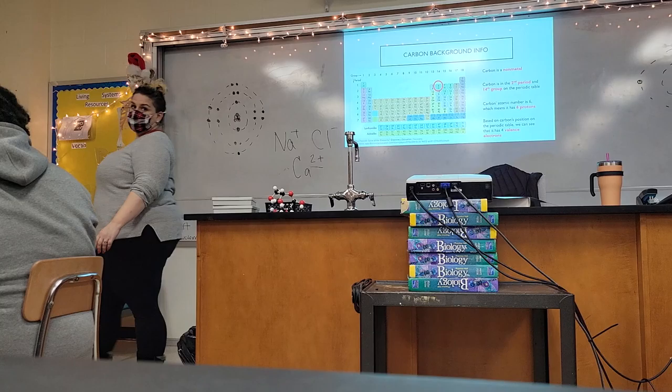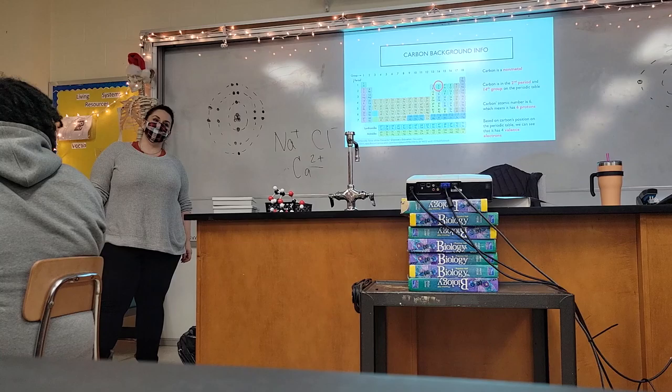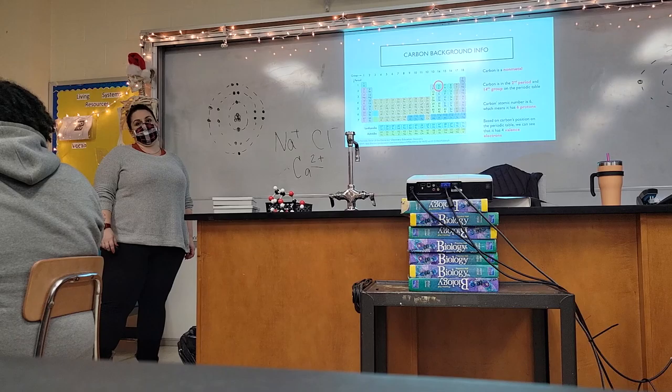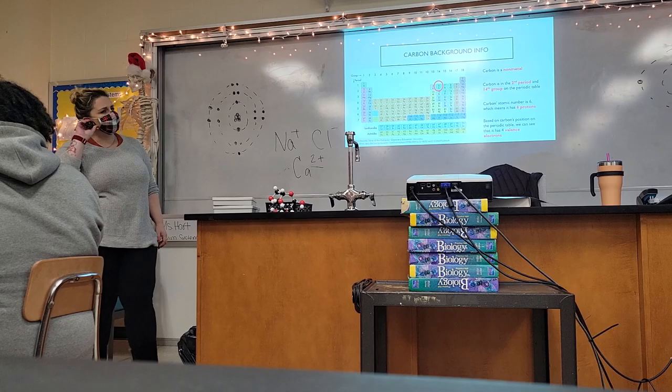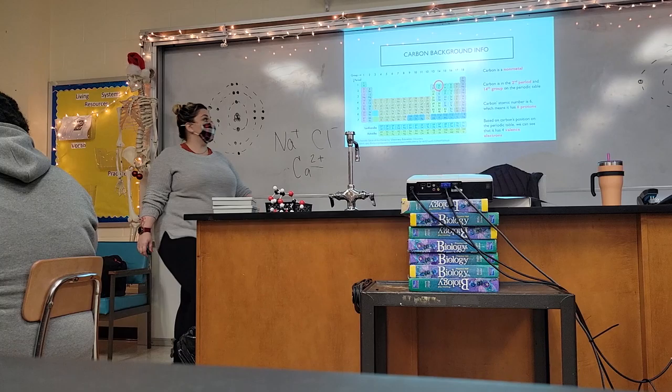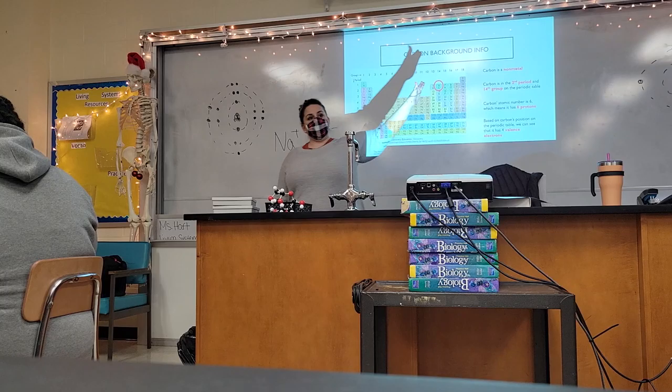All the elements in the 14th group share one characteristic — one chemical property. They all have four available valence electrons. Remember, all the elements in Group 1 have one, all in Group 2 have two, and Group 14 elements all have four available electrons.